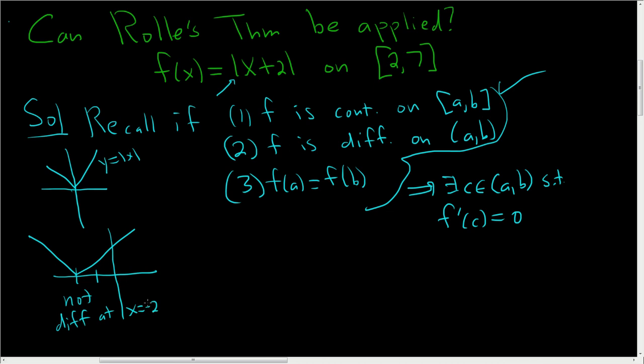at x = -2, but who cares? Negative two is not between 2 and 7. We only care about our function between 2 and 7, and in that region it's a straight line. Straight lines are differentiable, so no problem there.